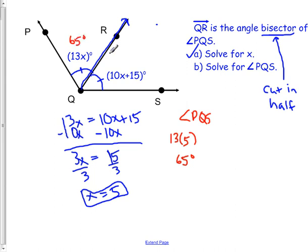And then, since we said that it's the bisector, that means this half also has to be 65. But let's just double check and make sure we did our math right. So we do 10 times 5 plus 15. So this would be angle SQR.